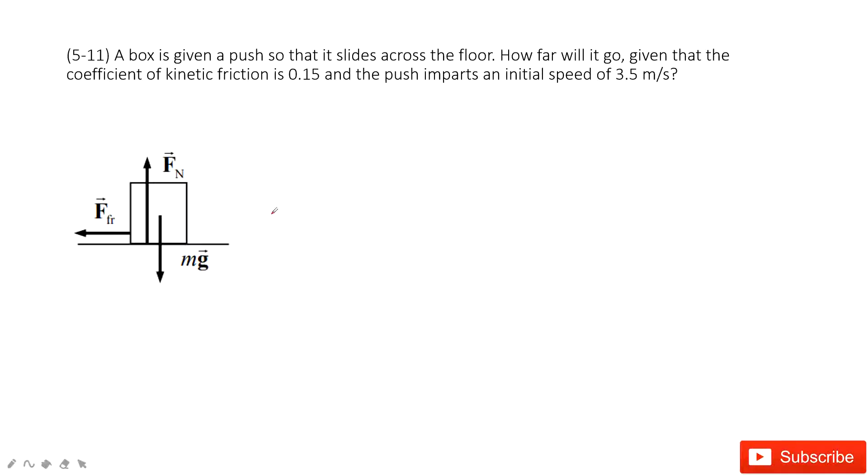First, when they tell us there is a box and the box is given a push so that it slides across the floor, you can see we give the box a push. Then there is no force acting on this box by the person. We just give it a push, so this box has an initial velocity.